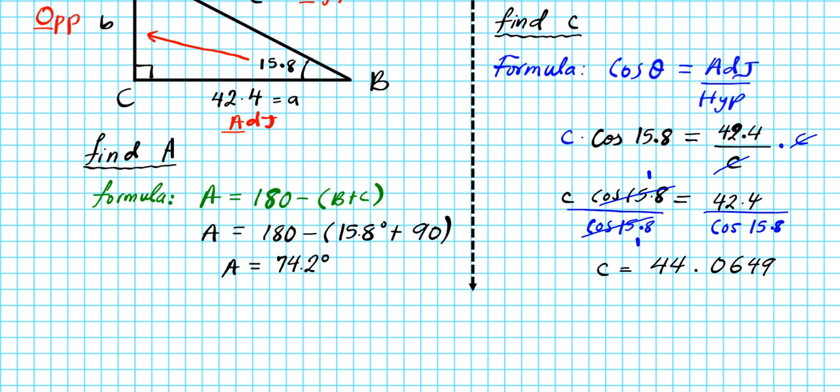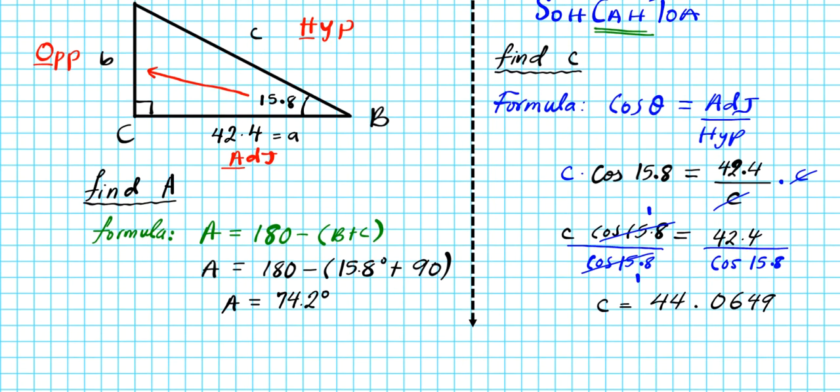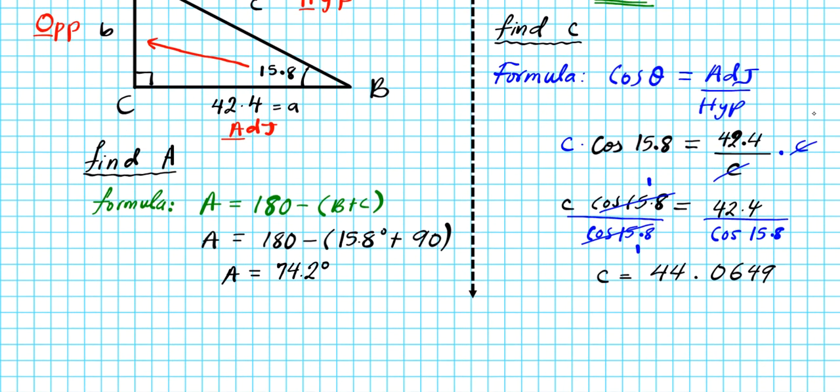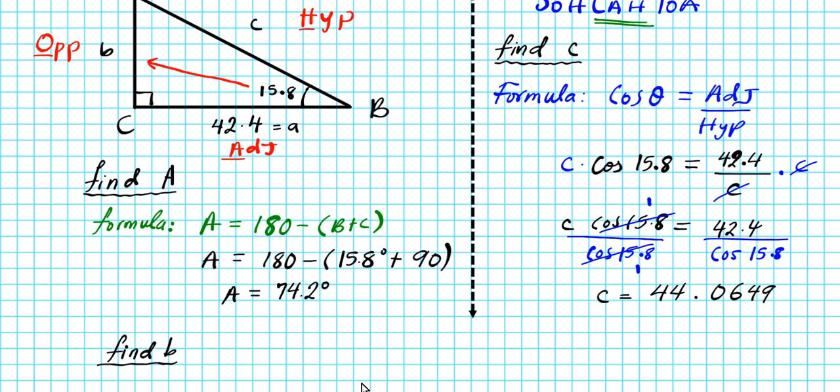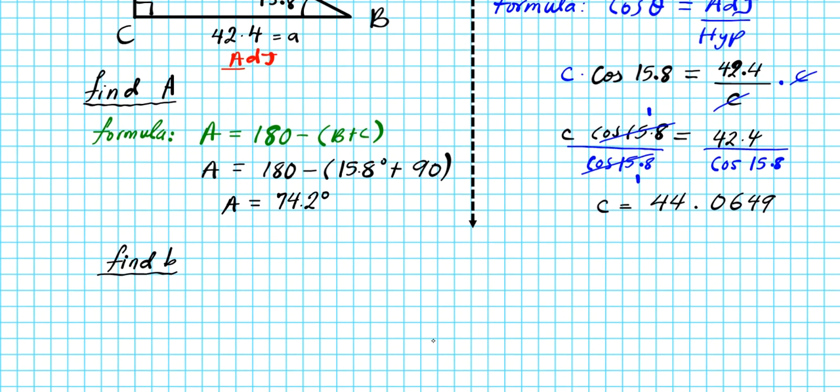Now are we done solving the triangle? The answer is no. We found big A, little c. Now we need to find the measure of little b. So let's find little b. Now we can use SOHCAHTOA again to find little b, but there's another formula that we can also use, and that is the Pythagorean theorem. So let's go ahead and use the Pythagorean theorem here just for variation purposes.